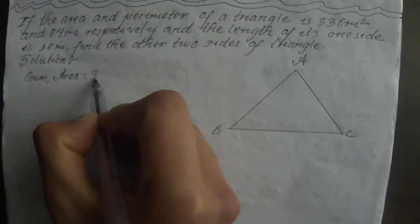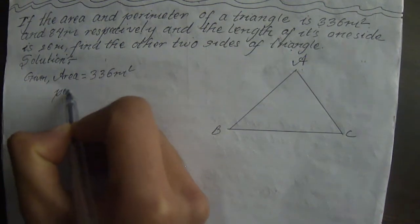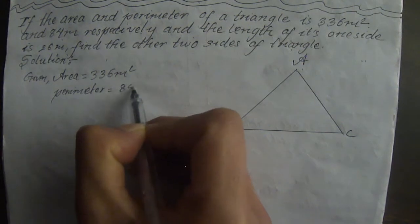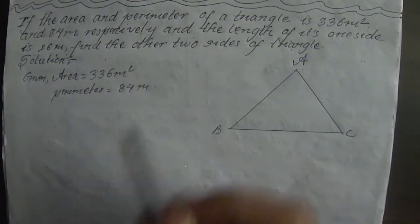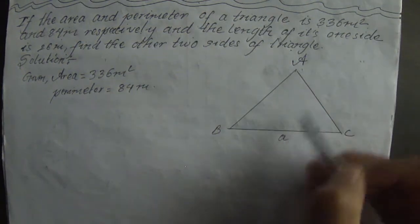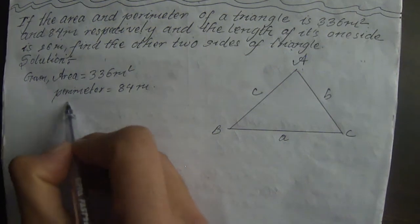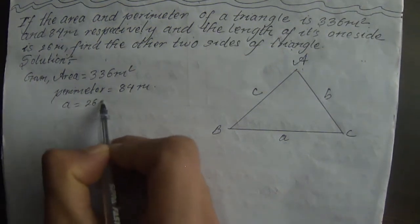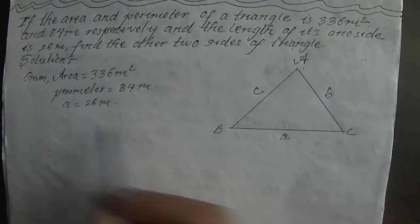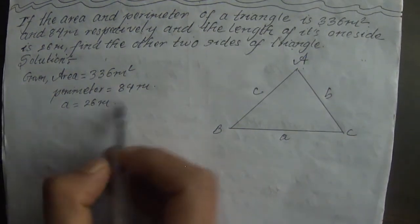Area is equal to 336 m². Perimeter is equal to 84 m. One side, A, is 26 m. We can see this side of the triangle is 26 m. The perimeter P is equal to 84 m.